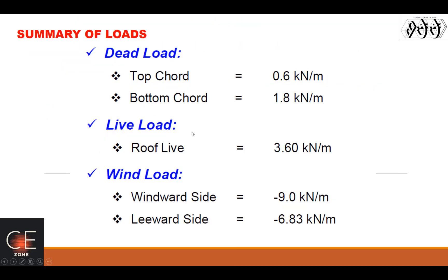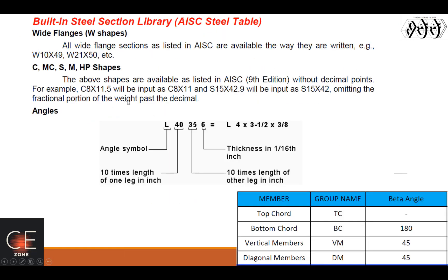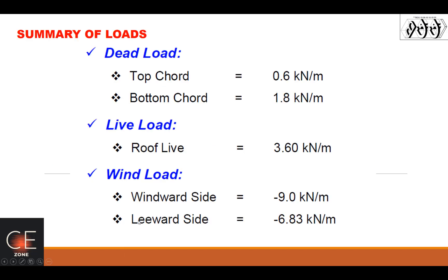So we have a summary of loads here based on our parameters. I'll show you how to compute this one. So top chord is 0.6. This is gravity going down. Bottom chord going down. And then live load.